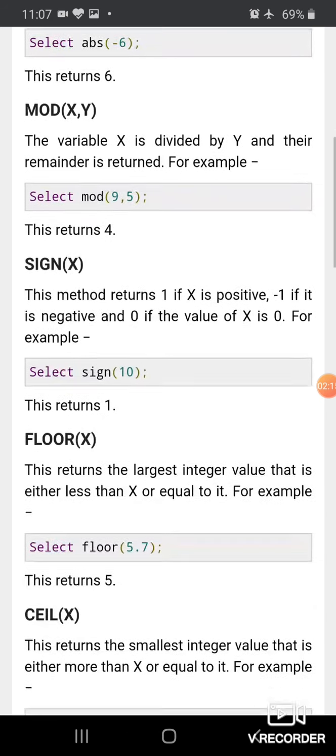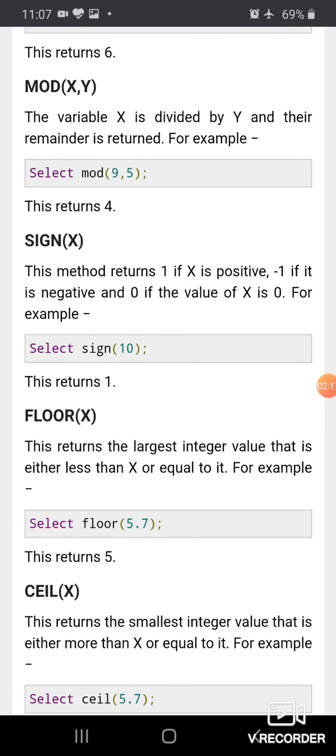Fourth is FLOOR(X). The FLOOR function returns the largest integer value that is either less than X or equal to X. SELECT FLOOR(5.7) returns 5. It returns the largest integer value that is either less than X or equal to it, but can't be greater than that.